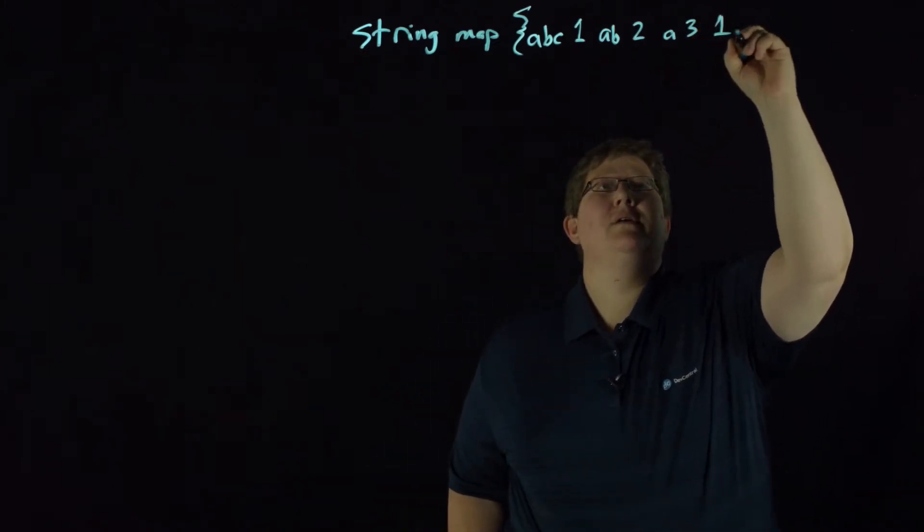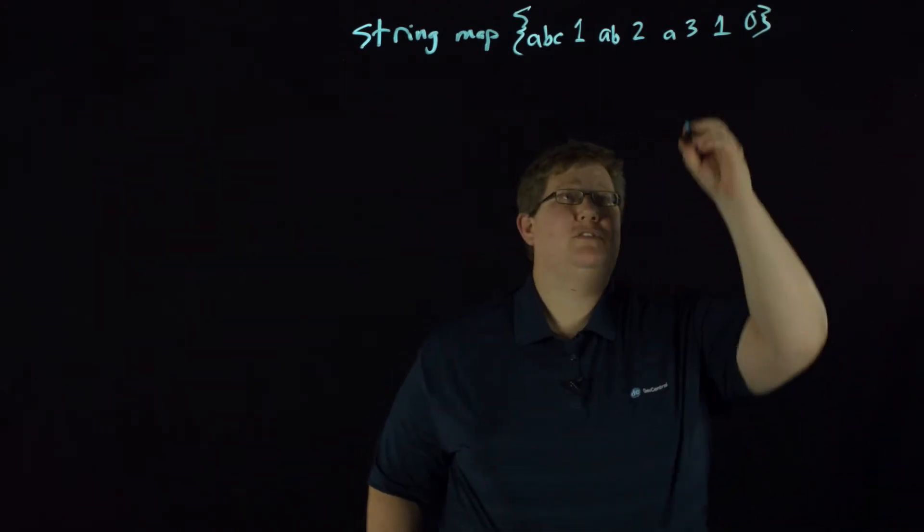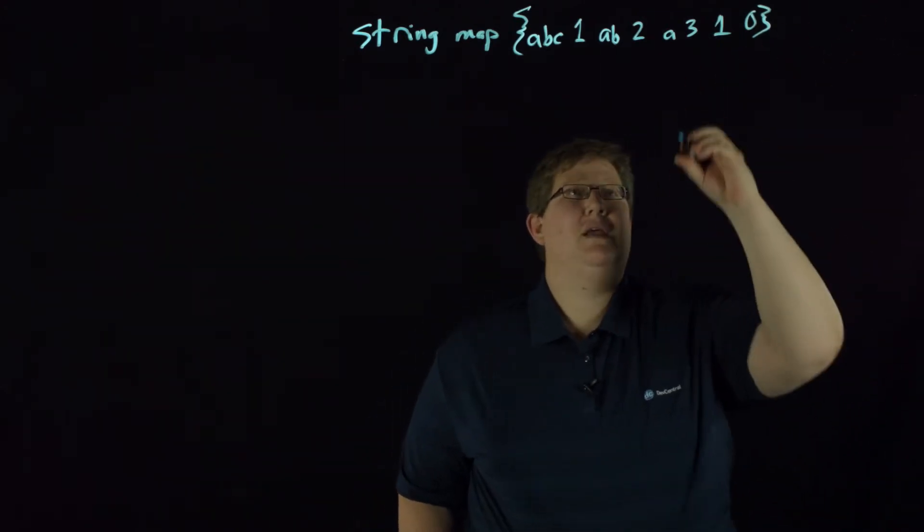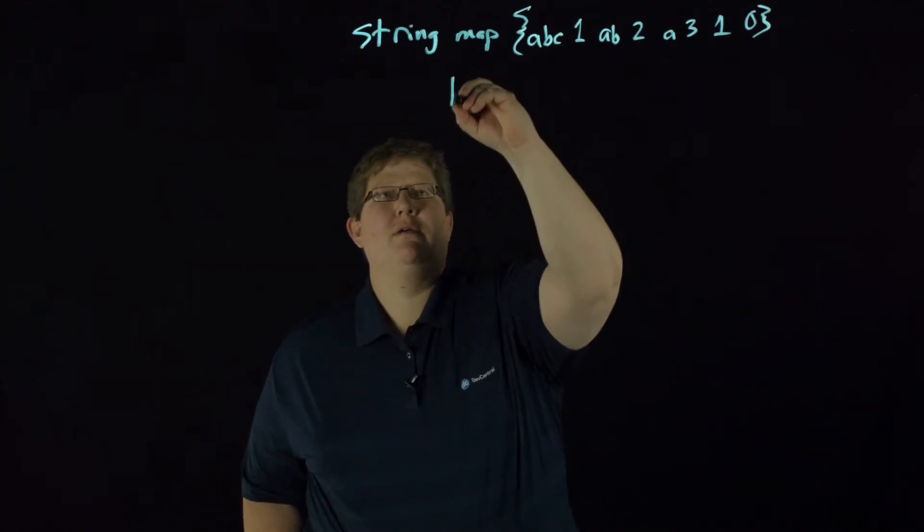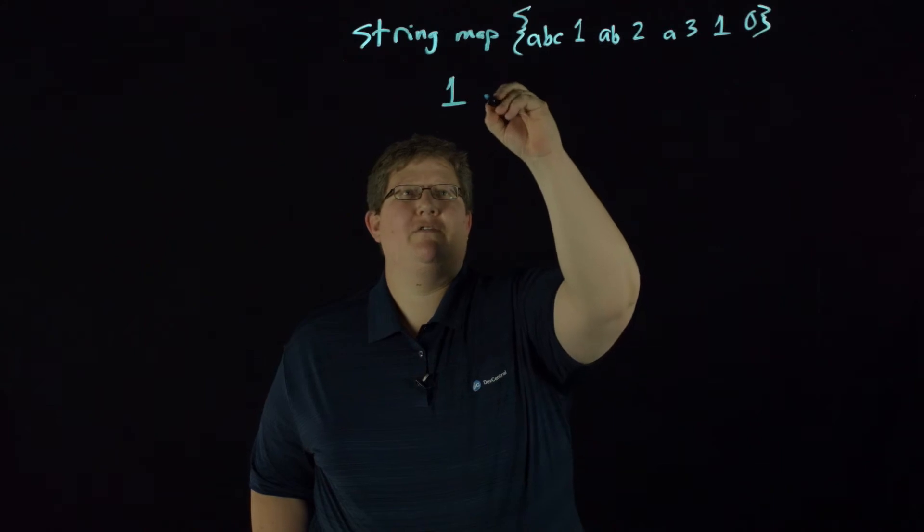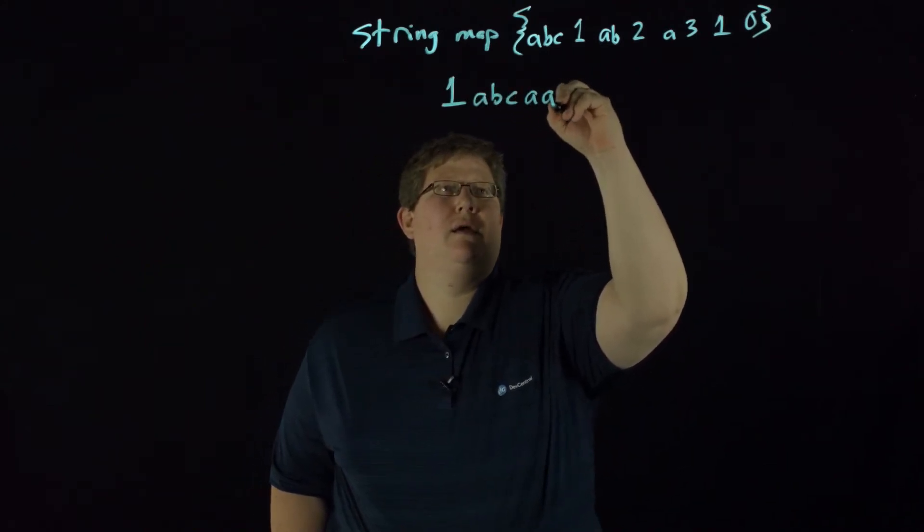And then we're going to map the number one to zero. I don't have enough room to carry on this, so I'm just going to put it right below, but ordinarily this would be in line. So we're going to work with this string: one ABC A AB.